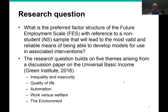So what is the research question? Simply put, it is this: what is the preferred factor structure of the Future Employment Scale with reference to a non-student sample, that will lead to the most valid and reliable means of being able to develop models for use in associated interventions? The research builds on five things published by the Green Institute in 2016: inequality and insecurity, quality of life, automation, work versus welfare, and the environment.